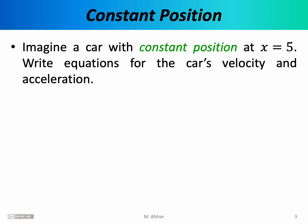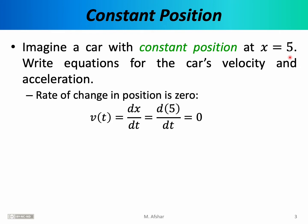As our first example of kinematics, imagine a car with constant position at x equals 5. Write equations for the car's velocity and acceleration. This is a boring example — we're talking about a car that is simply parked on the street at x equals 5 meters. To calculate velocity, we take the derivative of position with respect to time. The derivative of a constant is 0, so the car's velocity is simply 0.